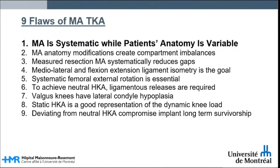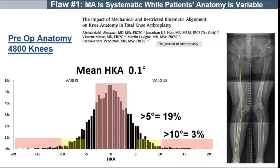First, mechanical alignment is systematic while patient anatomy is variable. The mechanical alignment technique can be defined as systematic in that all patients are implanted in a standardized fashion without considering the individual native joint anatomy and physiological soft tissue laxities.